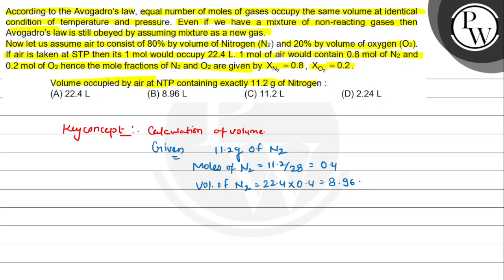Now, air has 80% volume of nitrogen and 20% oxygen. So 0.8 times volume of air equals volume of nitrogen. Volume of air equals volume of nitrogen divided by 0.8, which is 8.96 divided by 0.8.